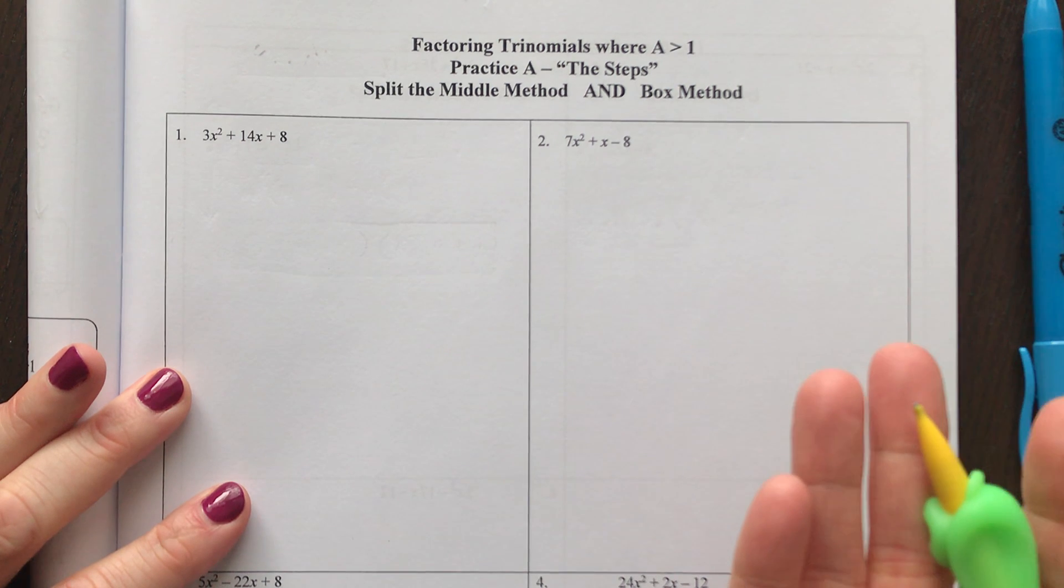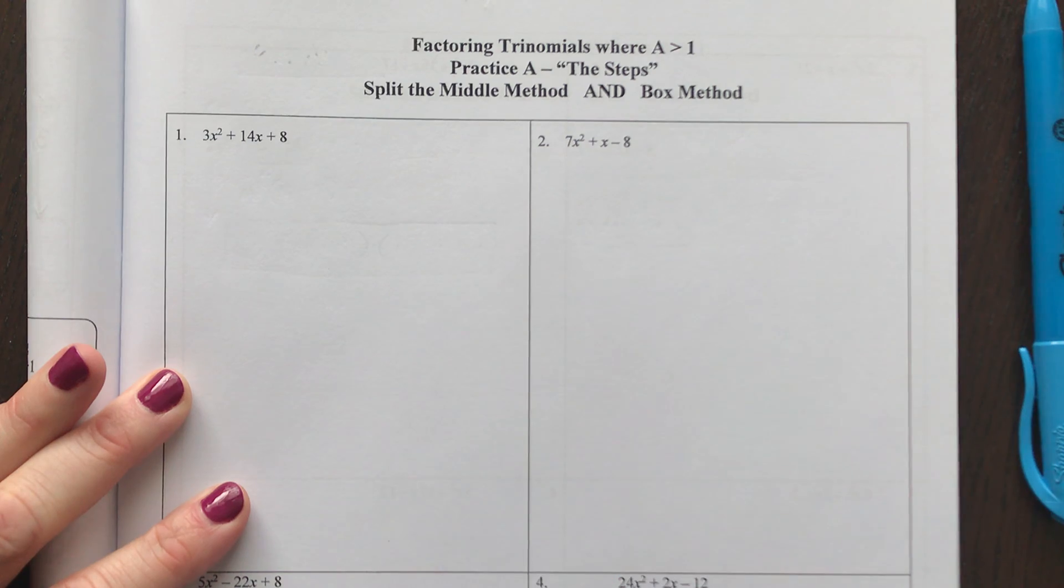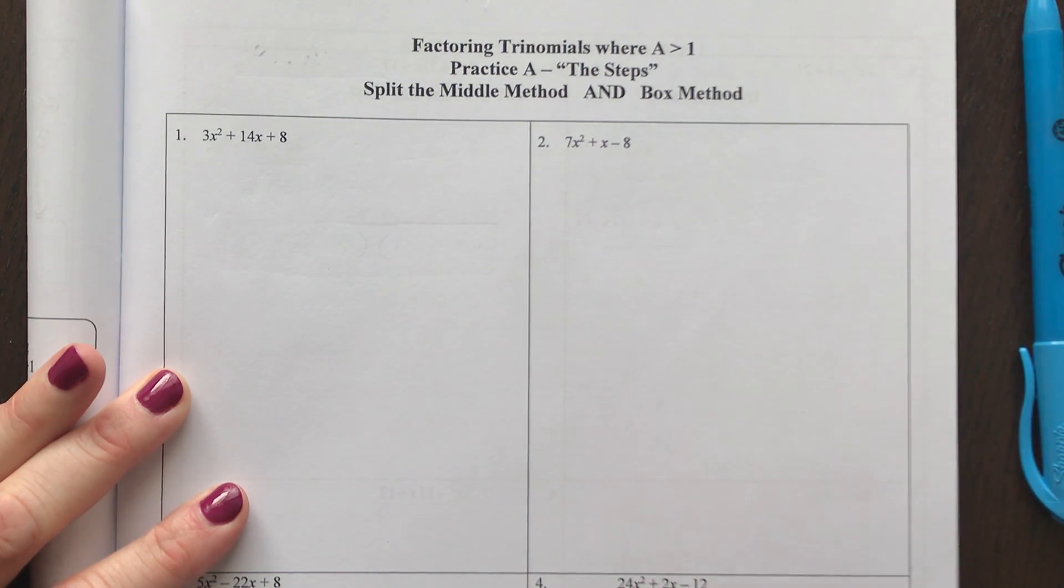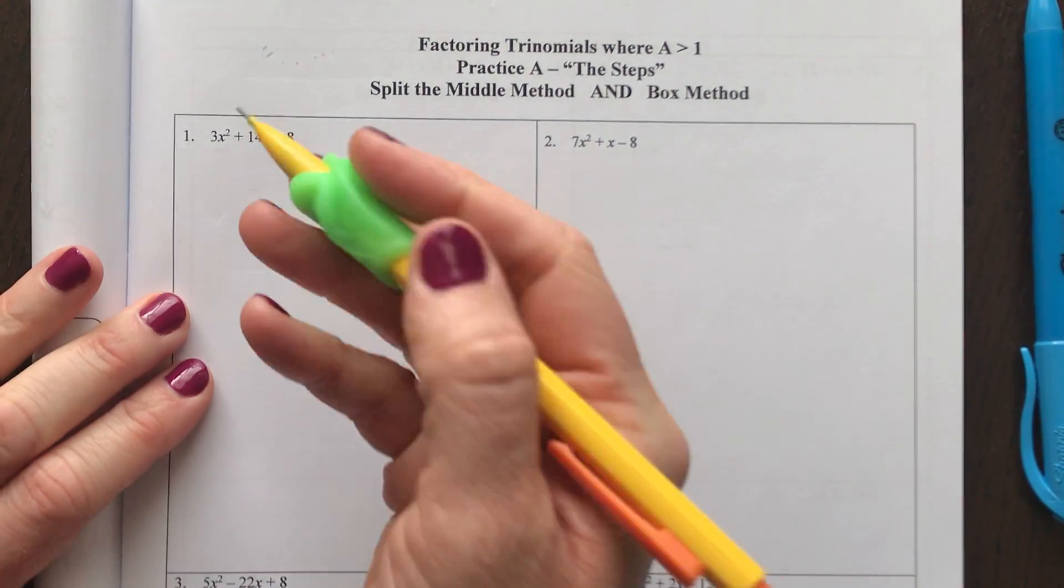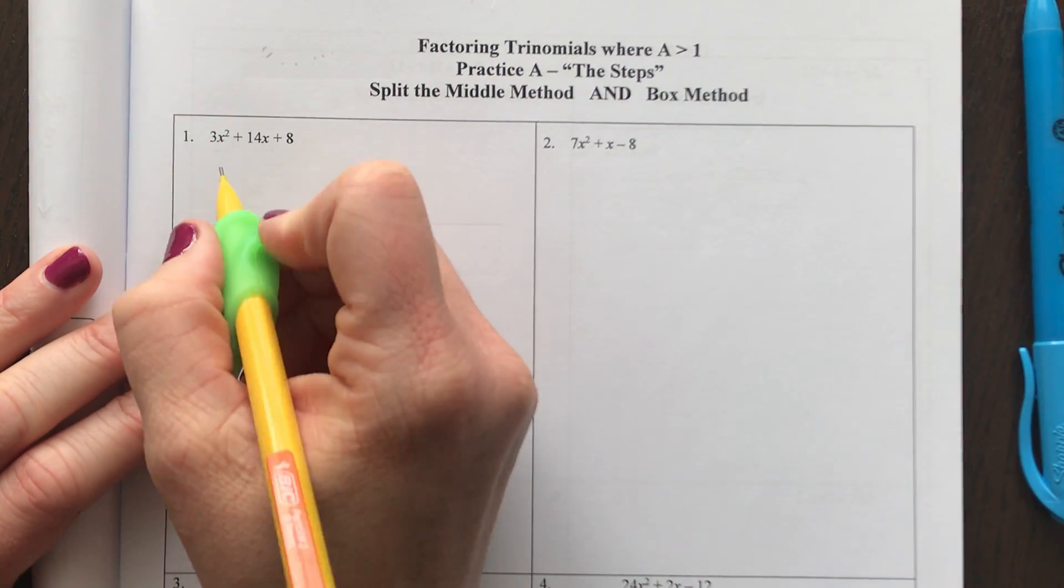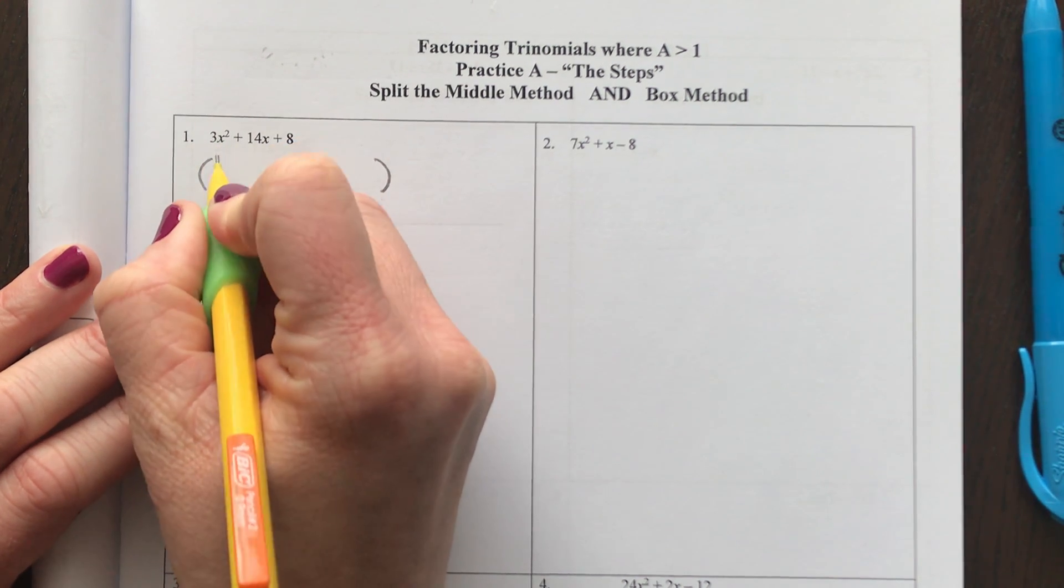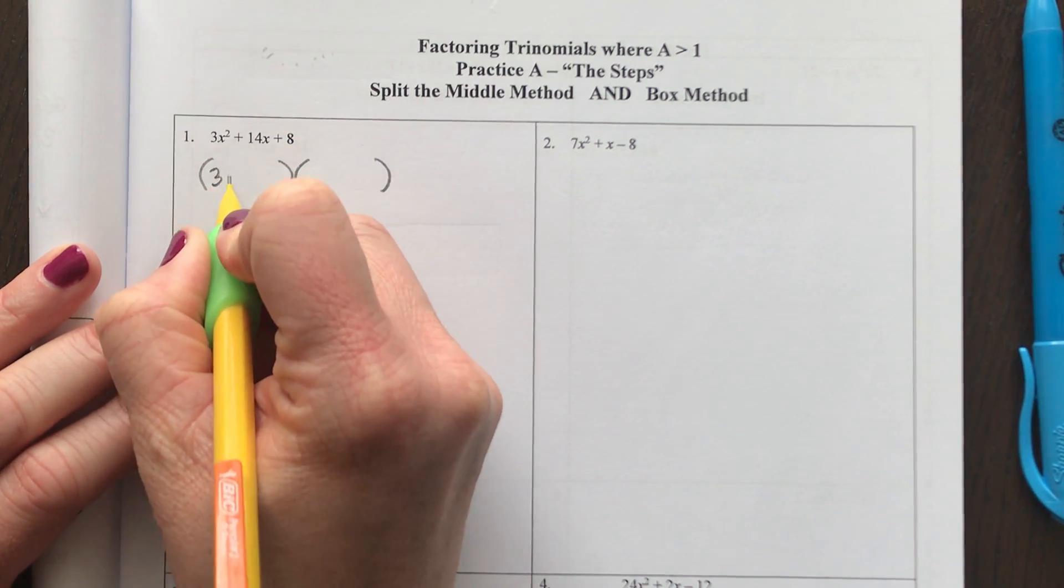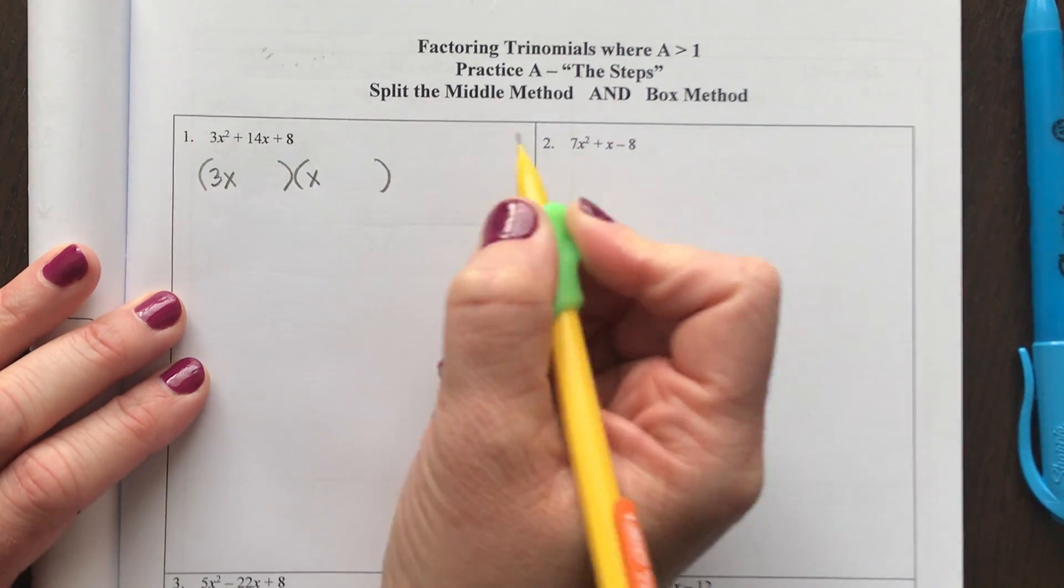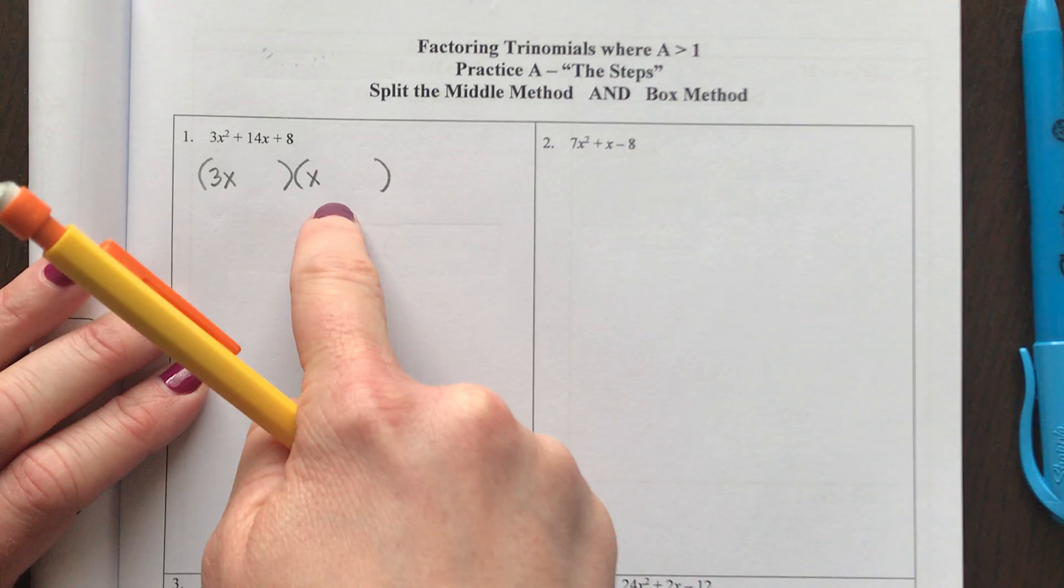Although guess and check is a perfectly great method, it just takes a little bit more time. So I'll show you one guess and check and then a helpful tool. In order to have two binomials factor to make 3x², the only factors that make 3x² would be a 3x times an x. There's no other numbers that multiply to make 3 and an x².